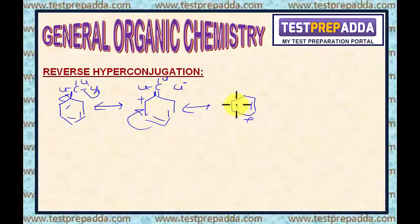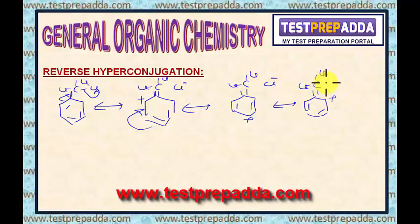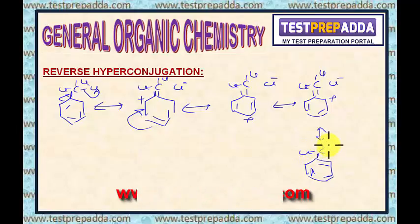Now, the next resonating structure I can write like this. And then the next resonating structure will be this. In the same manner, you can participate this CL in the hyperconjugation with the ring and this CL also.